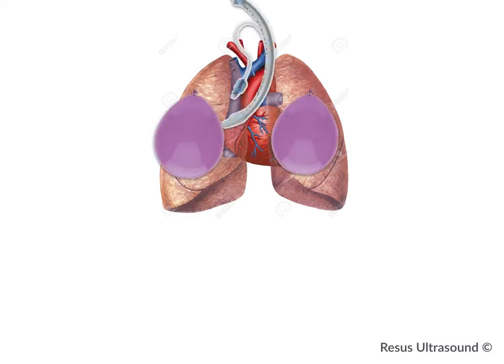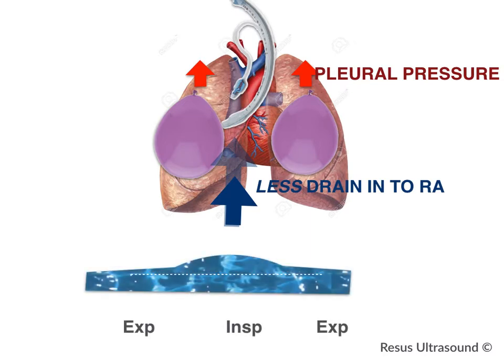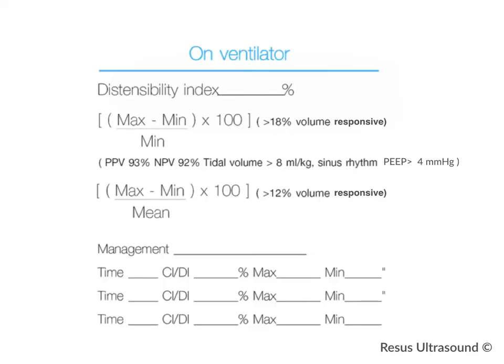In intubated patients on mechanical ventilation, when you inflate the patient's lungs in the inspiration phase, it increases pleural pressure. This means the IVC cannot drain into the RA, and instead the IVC distends during inspiration. If the variation or distension of the IVC is more than 18%, the patient is probably volume responsive — equivalent to a spontaneous breathing patient with a collapsing IVC.